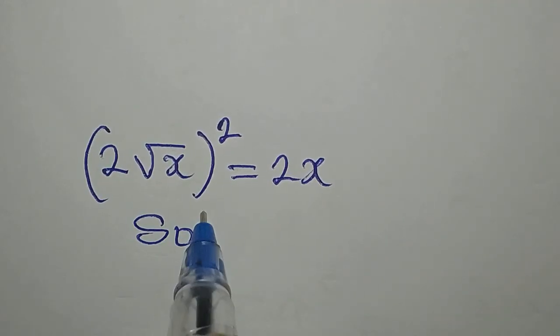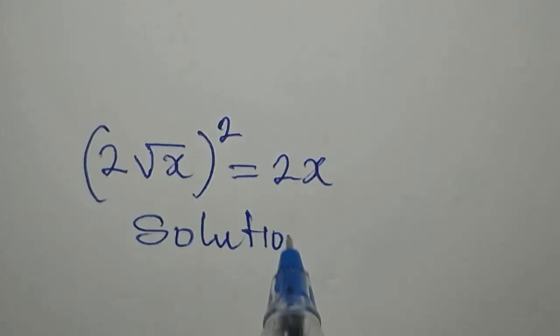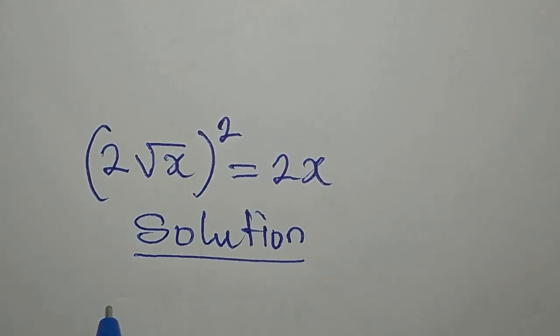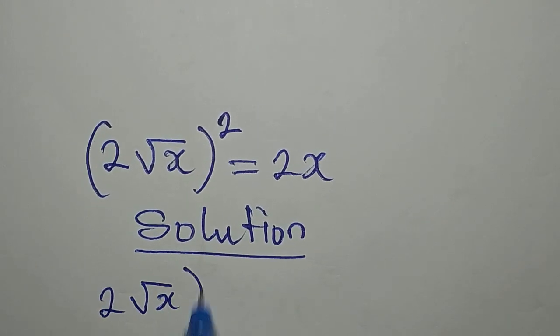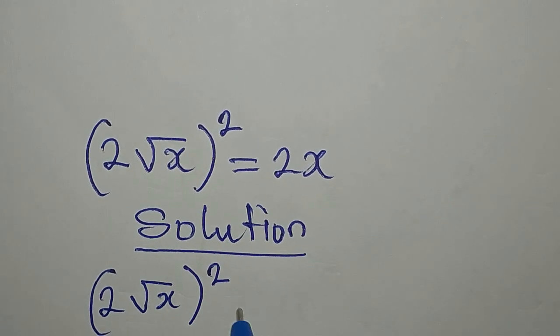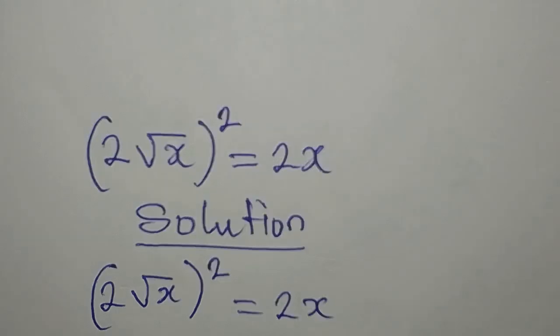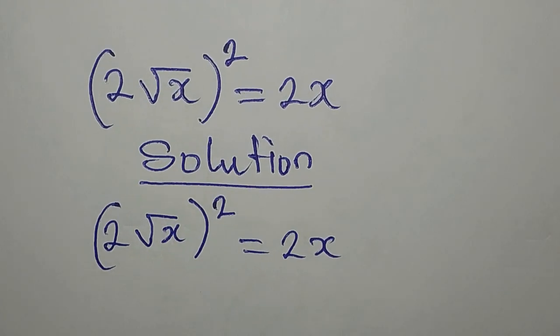Hello everyone, we have this problem to deal with: 2 square root of x to the power of 2 equals 2x. Now how do I deal with this?